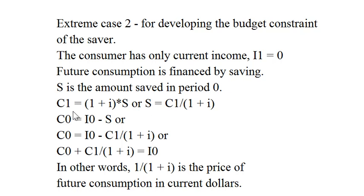C1 future consumption is equal to (1 + i)*S or S equals C1 divided by (1 + i). We call this discounting by (1 + i).